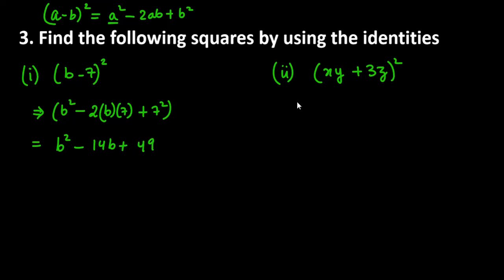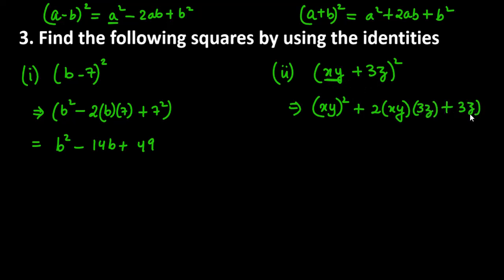This is the answer for the first part. Now, second part, you can see that we have plus sign between the terms. So we will use the first identity which is a square plus 2ab plus b square. Now, first term ka square is xy whole square plus 2a into b. a is xy, b is 3z, and b square is 3z square.